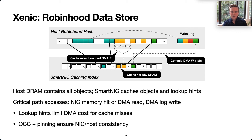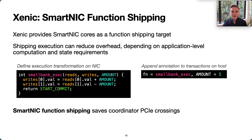Writes update the NIC cache directly and are logged into host memory, resulting in only a single DMA on the critical path. To ensure consistency between the NIC and host tables, we leverage the existing commit protocol with an added pinning mechanism. ZNIC applies SmartNIC cores as a target for function shipping, allowing transaction execution logic to be performed on the coordinator's local NIC cores instead of host cores. Doing so increases efficiency by eliminating intermediate PCIe crossings at the coordinator and by performing execution near the NIC's efficient Ethernet interfaces.